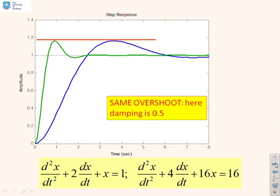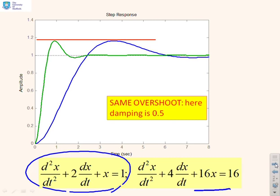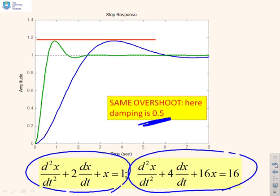That is a very insightful and useful observation: the overshoot depends only on the damping. The overshoot times are different because the parameters differ, and the settling times are different, but the magnitude of the overshoot is the same. Often the magnitude of the overshoot is a key property that you need to know about.